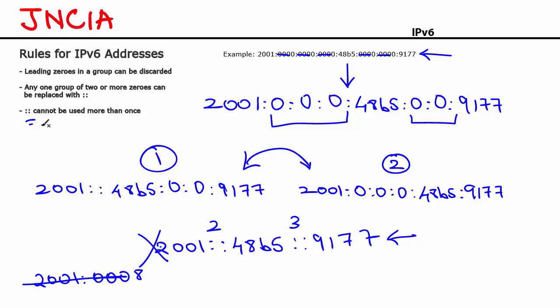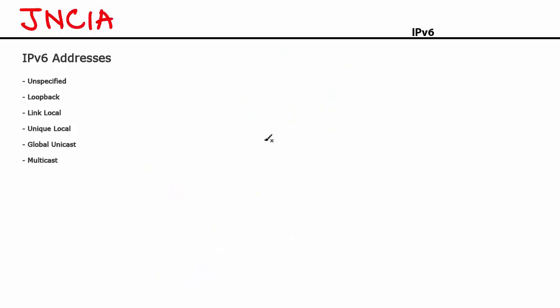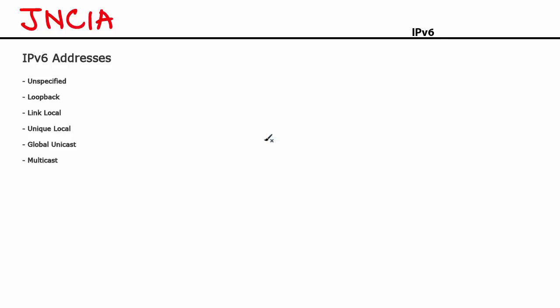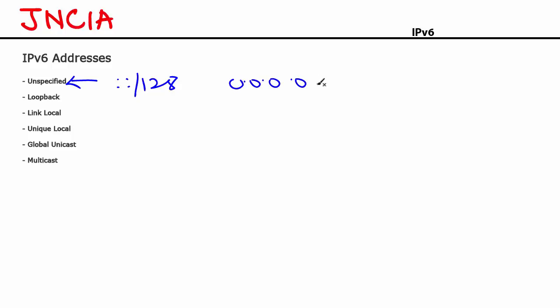Let's now look at the different IPv6 addresses. The first one is unspecified. When a computer boots up, it has no address assigned to itself — that's when it uses the unspecified address to talk to others. If the computer is on a network that has DHCP enabled, the unspecified address is used before it gets an address assigned through DHCP. The unspecified address is denoted by ::/128, meaning the entire address is just zeros. This is the same as 0.0.0.0 in IPv4.